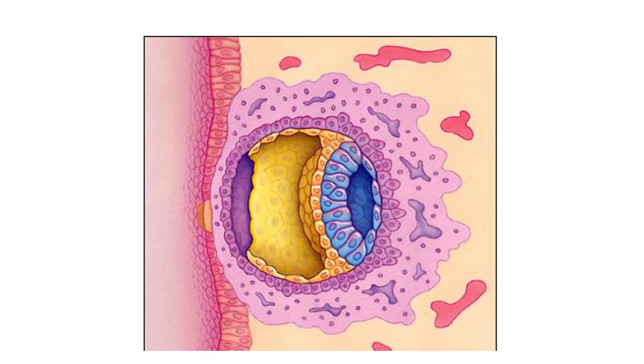As implantation proceeds, the inner cell mass develops into an embryonic disc that is two cell layers thick. This will give rise to the embryo.